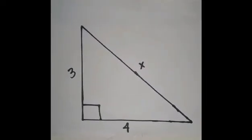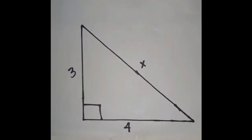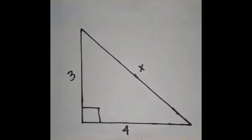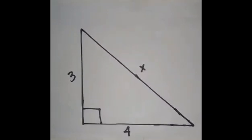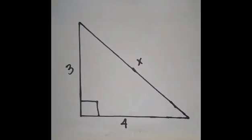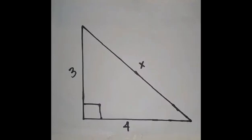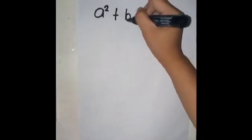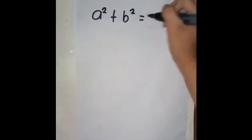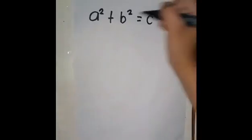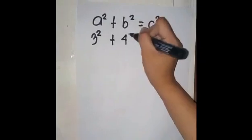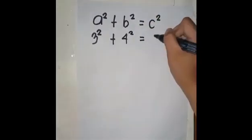Paano naman kung ang given ay ganito? Ang hinahanap natin ay ang c which is the hypotenuse of the right triangle, at ang given naman, ang dalawang legs ay 3 at 4. Ang gagamitin pa din nating formula ay a squared plus b squared equals c squared. Kaya papalitan lang natin ang mga letters para makuha natin ang value ng hypotenuse.